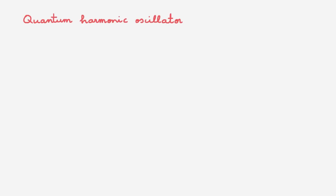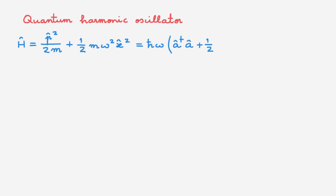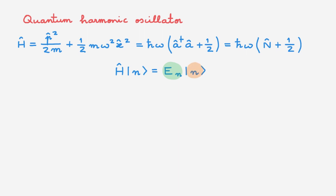Let's start with a quick refresher of the quantum harmonic oscillator. The Hamiltonian H is equal to the kinetic energy plus the quadratic potential energy. We can also write this in terms of the raising and lowering operators, or in terms of the number operator. This is the eigenvalue equation of the Hamiltonian, where En are the eigenvalues and the kets N are the eigenstates. The eigenvalues En are quantised and are equal to h-bar omega times N plus one-half, where N is a non-negative integer.